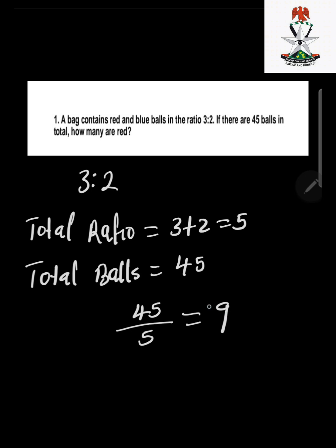We multiply this 9 by the ratio of red, which is 3. So we have 3 multiplied by 9, which gives us 27 red.